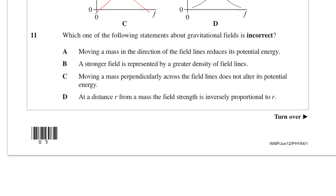Which one of the following statements about gravitational fields is incorrect? Moving a mass in the direction of field lines reduces its potential energy - that's correct. A stronger field is represented by a greater density of field lines - that's true. Moving a mass perpendicularly across field lines does not alter its potential - that's true. At distance r, the field strength is inversely proportional to r. No it's not, it's inversely proportional to r squared.